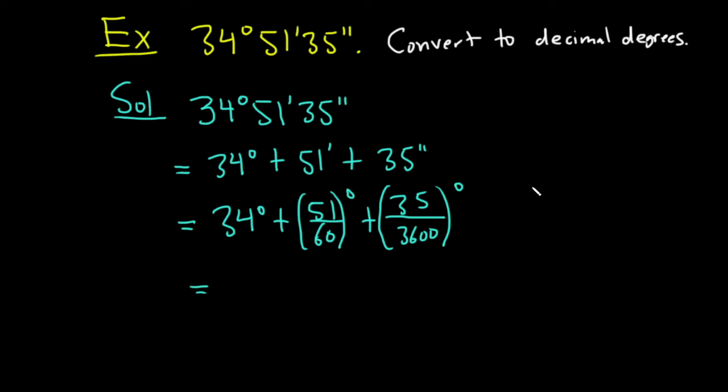Then what you do is you just type this all into your calculator. I actually haven't done this, I'm going to do it right now. So we have 34 plus 51 over 60 plus 35 over 3600. So this gives me 34, I'll round to three decimal places, 0.860 degrees. This would be the answer in decimal degrees.